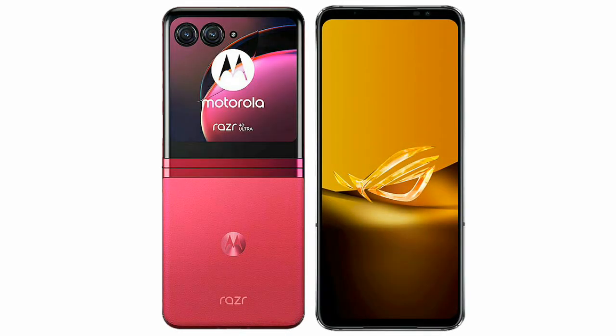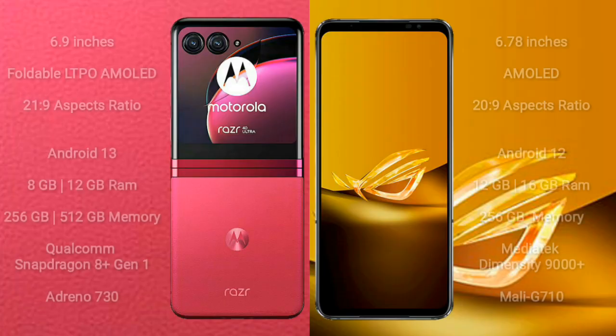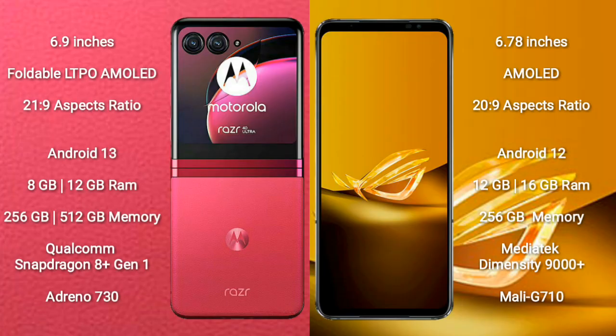I will compare the new Motorola RAZR 40 Ultra with ASUS ROG Phone 6D. Motorola RAZR 40 Ultra comes with a 6.9-inch foldable LTPO AMOLED display and aspect ratio 21:9. ASUS ROG Phone 6D comes with a 6.78-inch AMOLED display and aspect ratio 20:9.